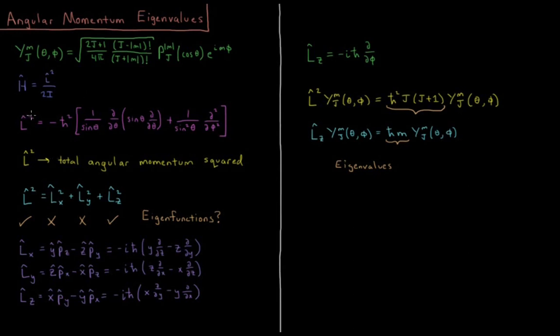Angular momentum operator squared equals negative h-bar squared times this value in parentheses: 1 over sine theta d d theta of the product sine theta d d theta, plus 1 over sine squared theta times the second partial derivative with respect to phi. So the L-squared operator is the total angular momentum squared.